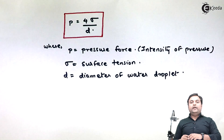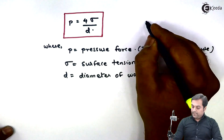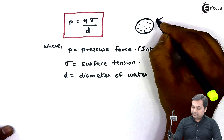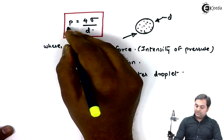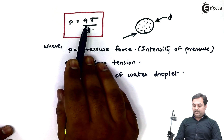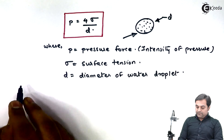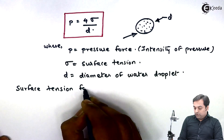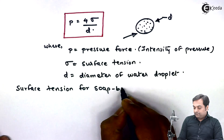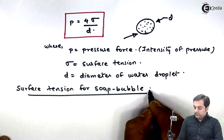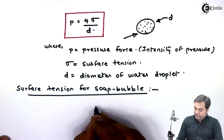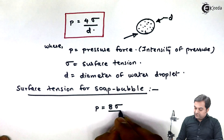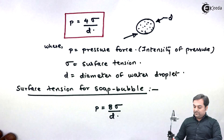This formula applies to any liquid droplet — here we are taking a water droplet. If we have a liquid droplet of diameter D over which a pressure intensity P is acting, we can calculate the surface tension using this relation. Similarly, the surface tension formula for a soap bubble is: P equals 8 times sigma divided by D.